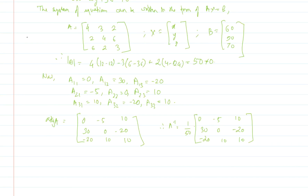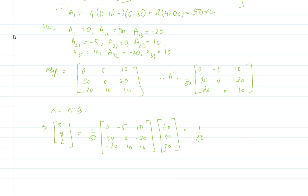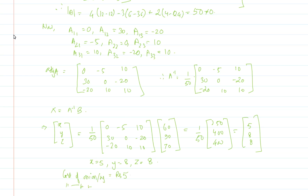Since X = A⁻¹B, we get [x; y; z] = A⁻¹ times [60; 90; 70]. Solving gives (1/50) times [250; 400; 400], which equals [5; 8; 8]. Therefore x = 5, y = 8, z = 8. The cost of onion per kg is ₹5, cost of wheat per kg is ₹8, and cost of rice per kg is also ₹8.